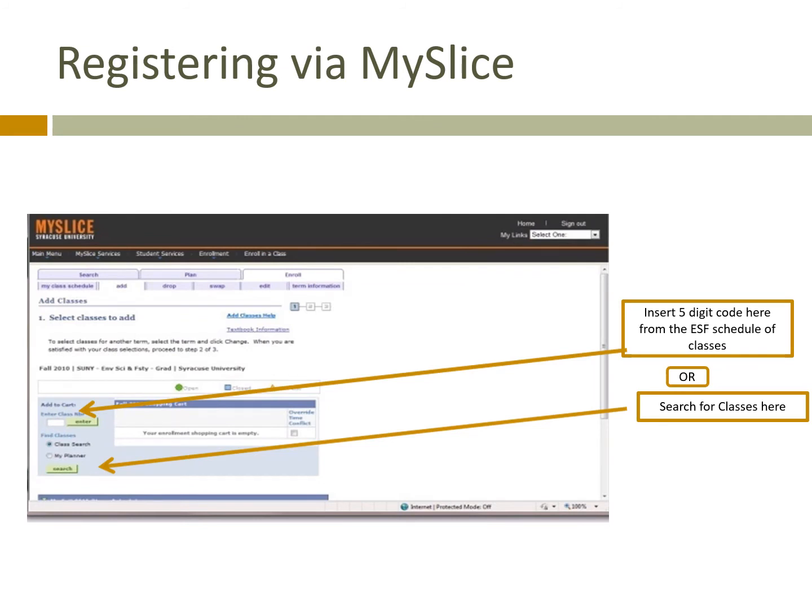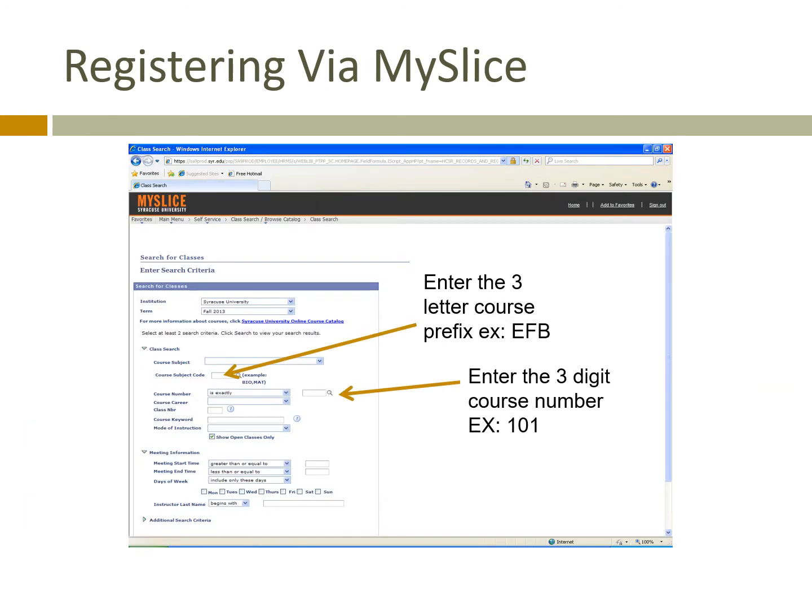There are two ways that you can enter a class into MySlice. The first is to go to the ESF scheduled classes and copy the five-digit code and paste it into the first box that you see here and click enter. The second is to click the search box and look for the class. If you click the search box, this page will appear.